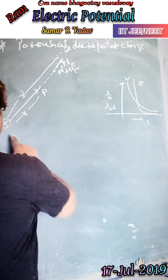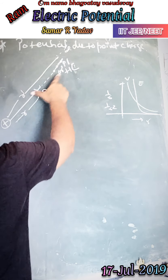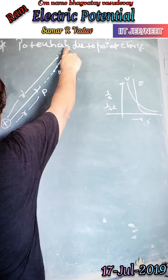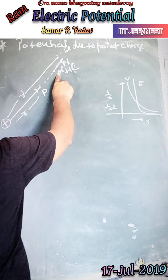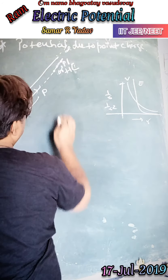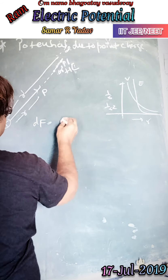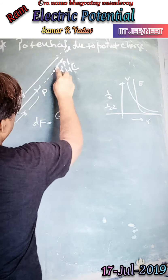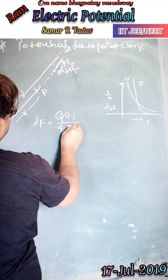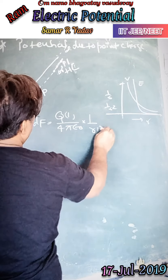We have a positive charge at point P. We bring a unit positive charge from infinite distance to point P. The work done is positive. The force on the unit positive charge is given by Q per unit positive charge, which equals 1 upon 4π ε₀ times 1 upon R-dash squared.